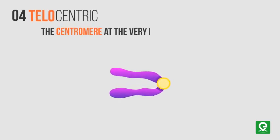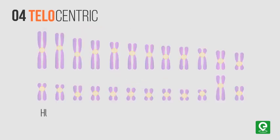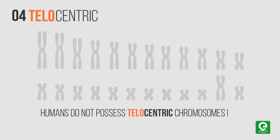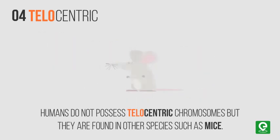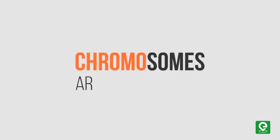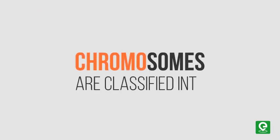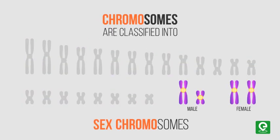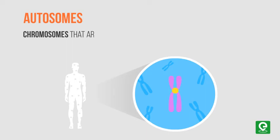Human chromosomes 13, 15, 21, and 22 are acrocentric. Fourth: telocentric chromosomes — they have the centromere at the very end of the chromosome. Humans do not possess telocentric chromosomes, but they are found in other species such as mice.